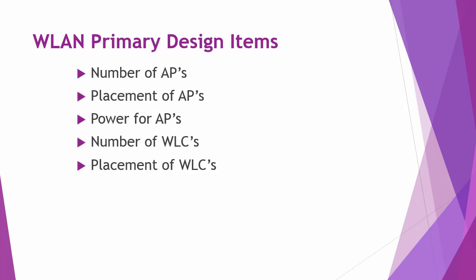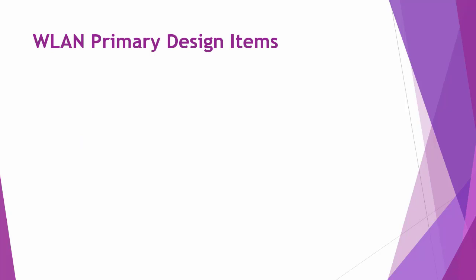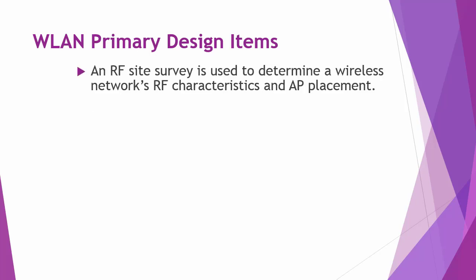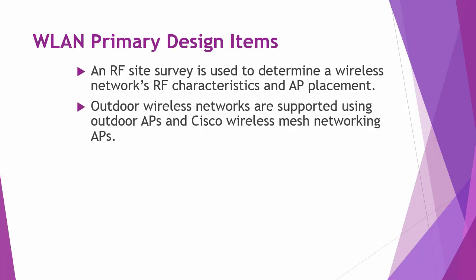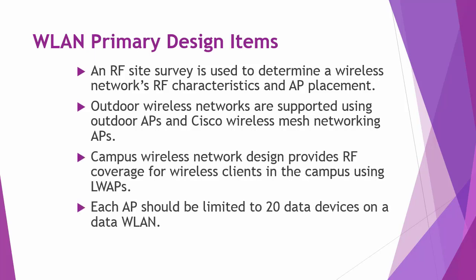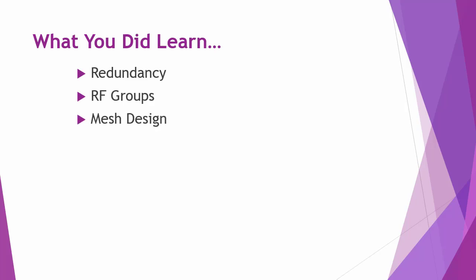The five primary wireless design items are: number of APs, placement of APs, power for APs, number of WLCs, and placement of WLCs. In summary: an RF site survey is used to determine RF characteristics and AP placement; outdoor wireless networks use outdoor APs and Cisco wireless mesh networking APs; campus wireless network design provides RF coverage using LWAPs; and each AP should be limited to 20 data devices on a data wireless LAN. Good luck in your studies.